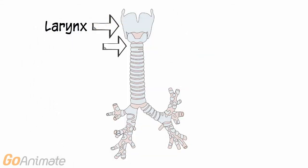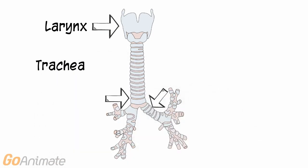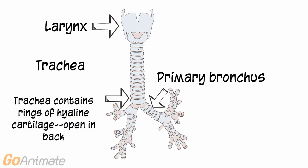Air moves from the larynx to the trachea. The trachea splits at an area called the carina into two primary bronchi. The trachea contains rings of hyaline cartilage. The rings are open in the back to allow for some flexibility.